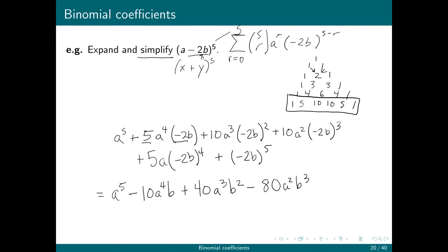The next term will be positive. 16 times 5 is 80 again. a times b to the fourth. And then minus 32b to the fifth.